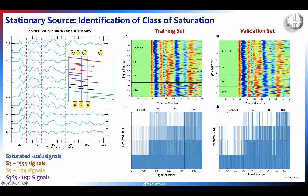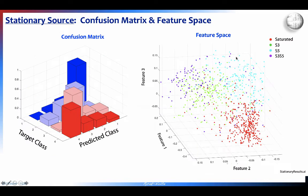Here are stacks of our signals under the four conditions — saturated, S3, S5, S35 — with a training set, validation set, training classification, and validation classification. We get fairly nice separation. The confusion matrix shows the diagonal is much higher than all off-diagonals. Using a majority rule — classifying a group of events rather than each single event — we achieve perfect classification of the saturation state of the fracture.